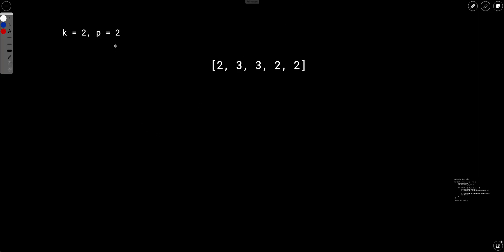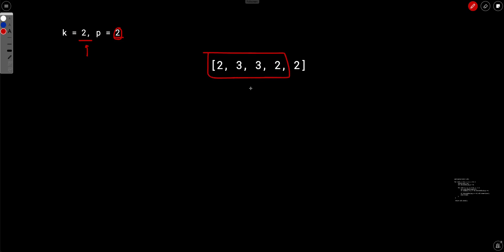Let's first try to understand the problem. Let's say we are given k equals to two and p equals to two. We need to find the number of subarrays such that there are at most two elements in the subarray which are divisible by two. For example, one subarray is valid because it has only one element divisible by two, and one is less than two. Another subarray is valid because it has exactly two elements divisible by two, which meets the at-most-two condition. But a subarray with three elements divisible by two is not valid.